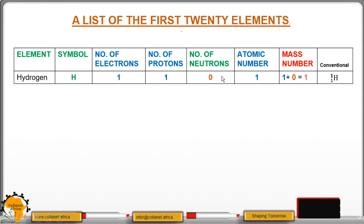And then the conventional way of writing the element. Here we have hydrogen as the first element in the periodic table. The symbol is H, the number of electrons is 1, protons 1, number of neutrons is 0. Therefore the atomic number is 1 since the number of protons is 1. It is good also to note that since the number of protons is 1, then the number of electrons is also 1. The mass number is 1 plus 0, which is protons plus neutrons, to get 1.